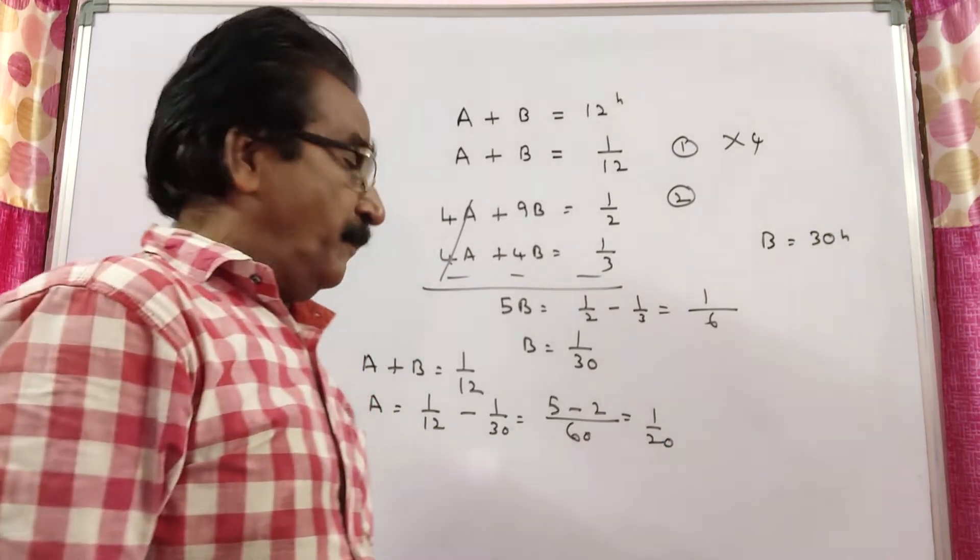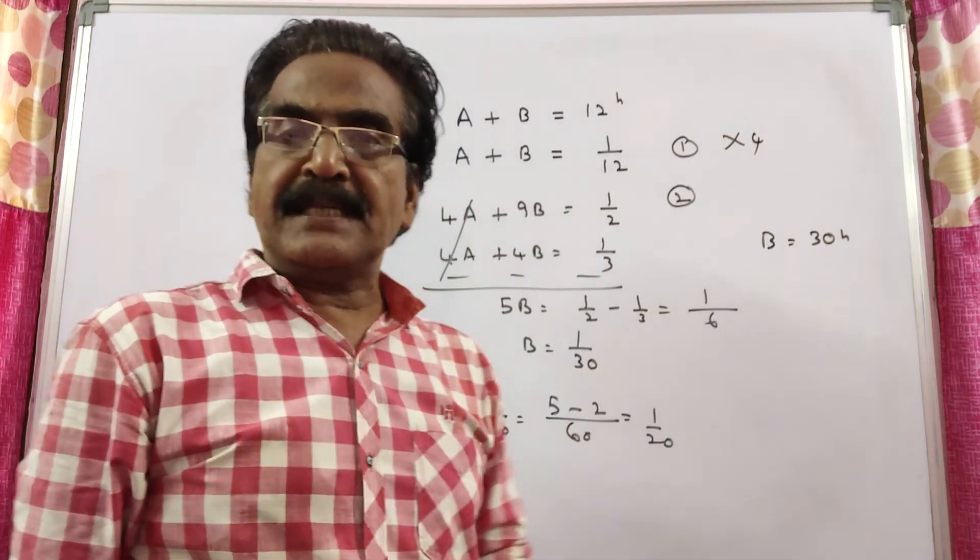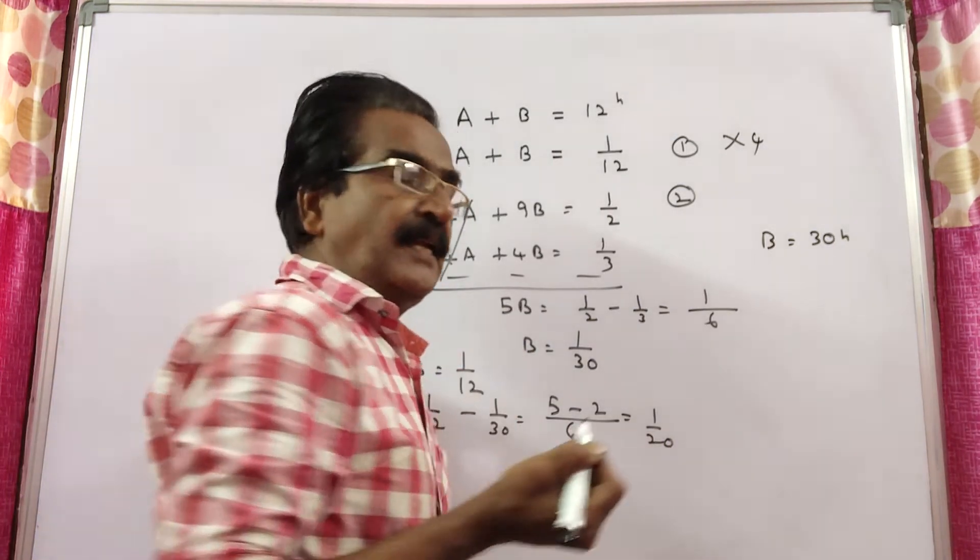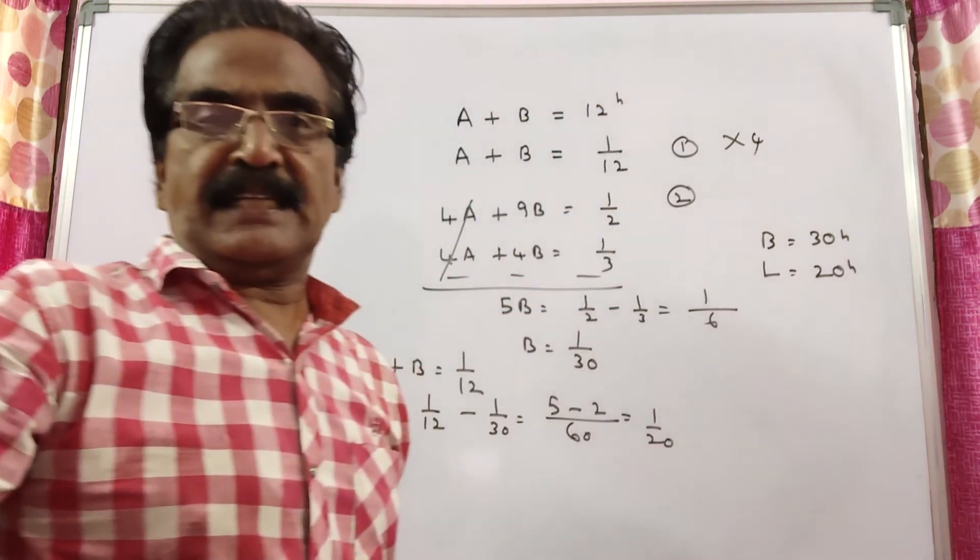So the larger pipe can do 1 by 20 work per hour. That means the larger pipe can fill this pool in 20 hours. That is our answer, friends. 30 hours, 20 hours.